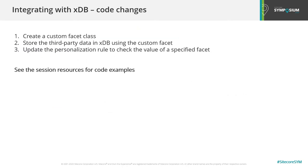The basic steps of integrating XDB are: create a custom facet class, store the third-party data in XDB using the custom facet, and update the personalization rule to check the value of a specified facet. I've provided code examples for developers in the session resources.